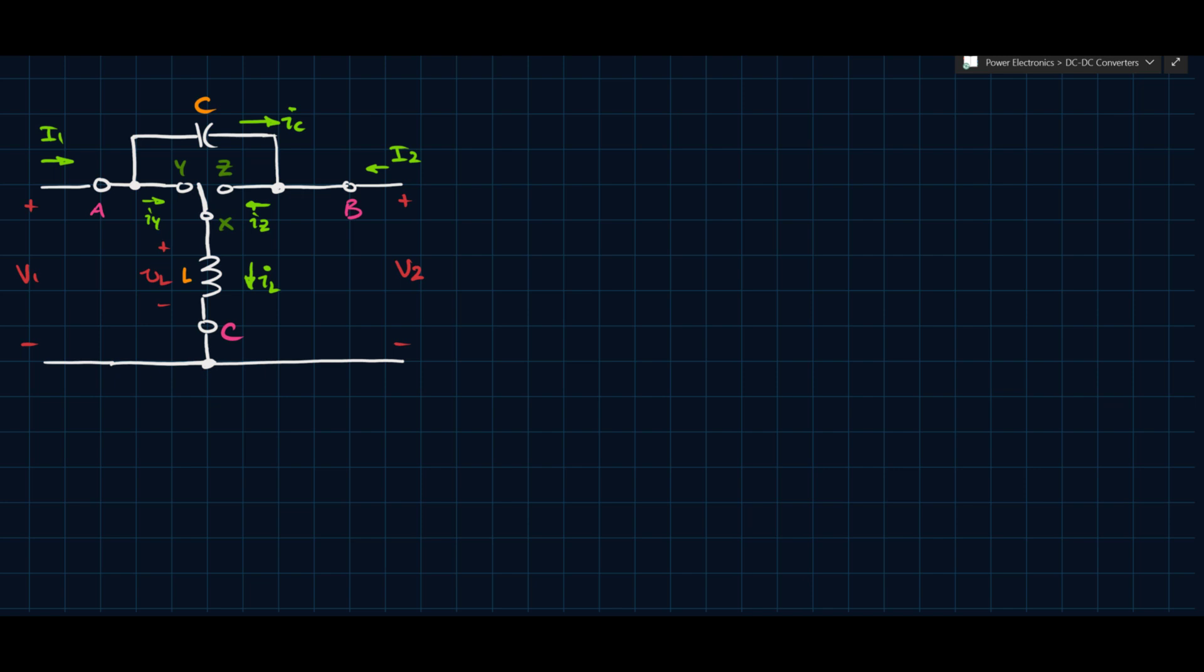Okay, so in this video we're going to take a look at the indirect converter. In the previous couple of videos we've seen first the canonical switching cell on which all of these things are based, and then we've looked at the direct converter, which was one way we can orient that switching cell, and now we're looking at another way that we can orient it.